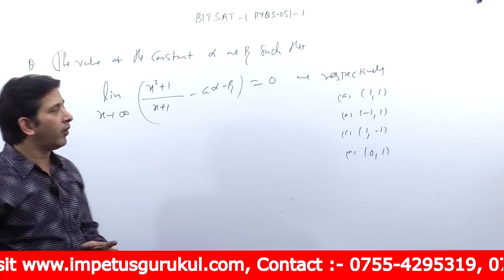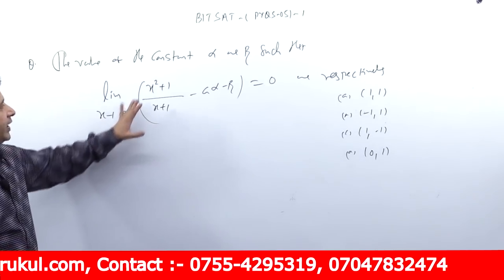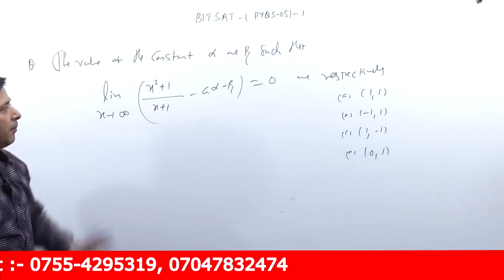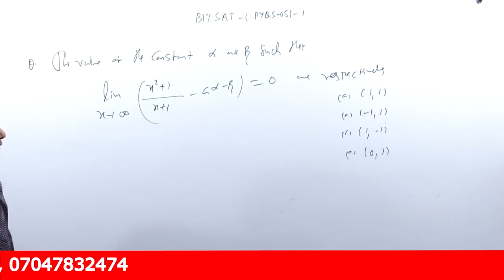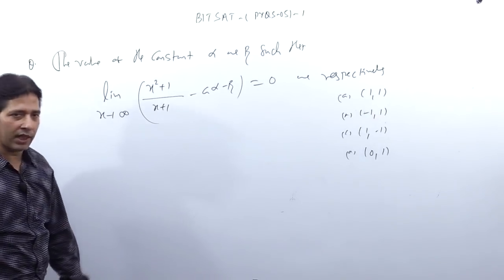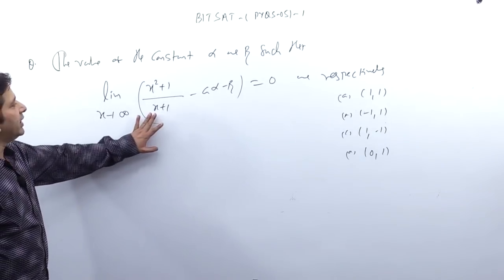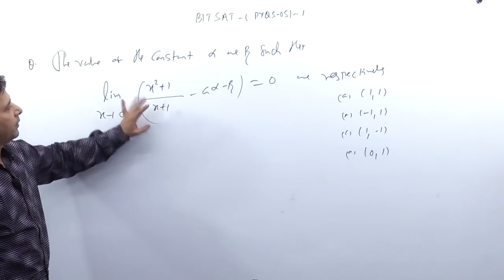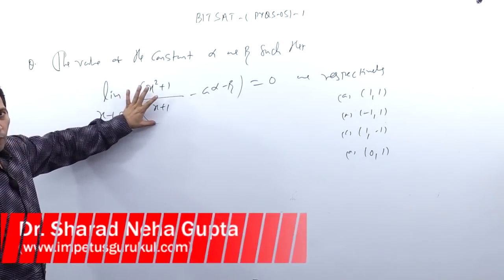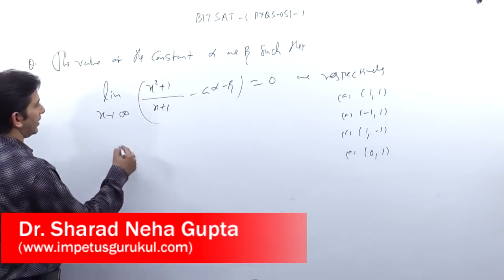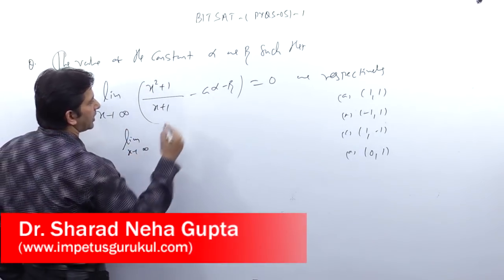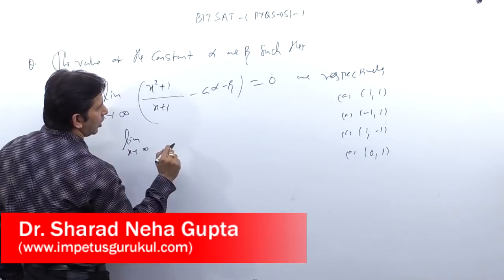Find the value of constants alpha and beta such that limit x tends to infinity of [x² + 1 upon x + 1 minus alpha x minus beta] equals 0. Simple question. Sometimes infinity-based questions have a straight logic: you have to check the degree of the numerator against the degree of the denominator. If you have to find the limit as x tends to infinity, you take the LCM to solve it.